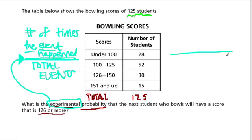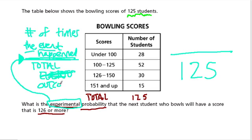We know we have 125 students — that's our total outcomes. The total outcomes are all the people in the survey, and here they tell us that's 125.